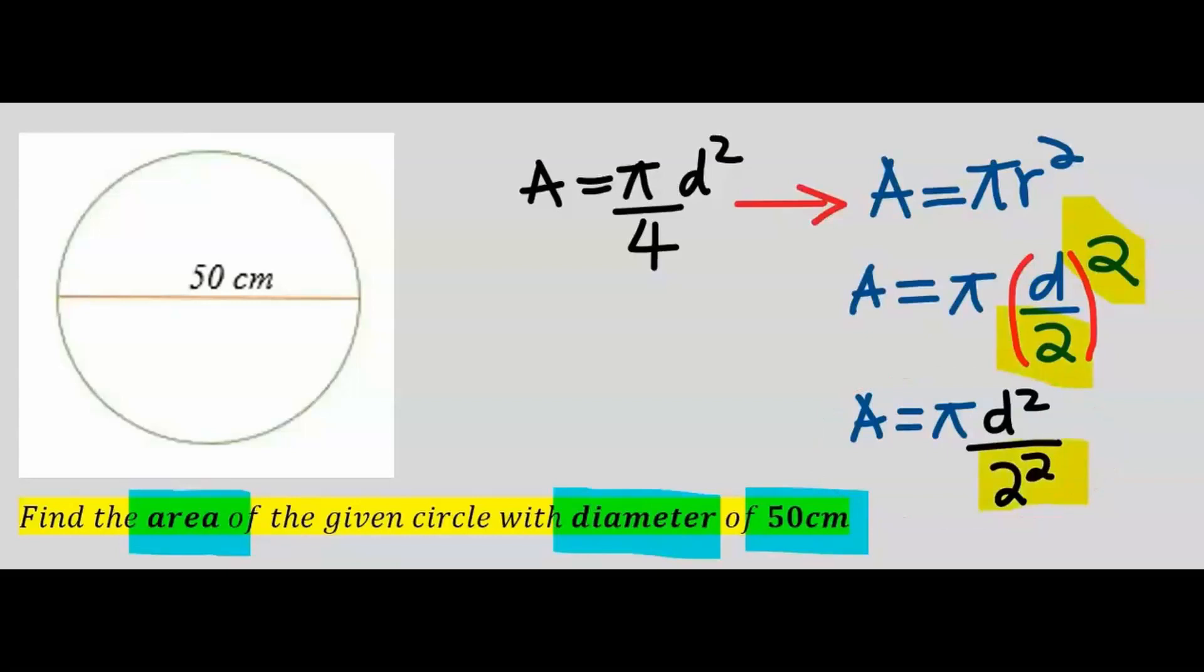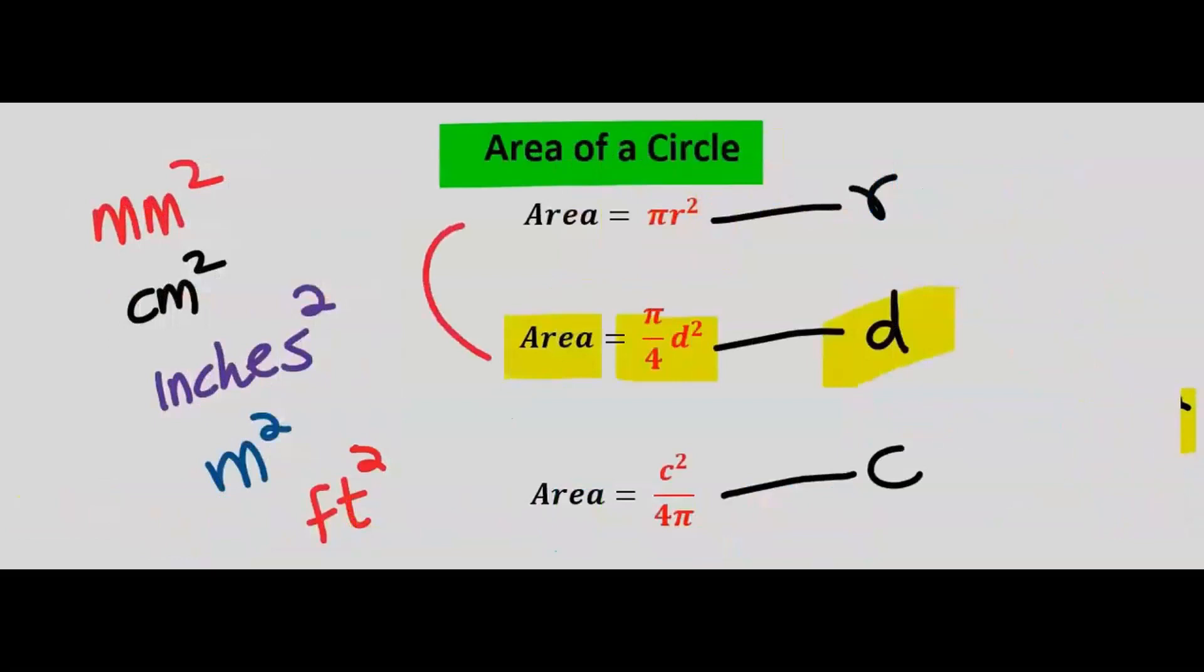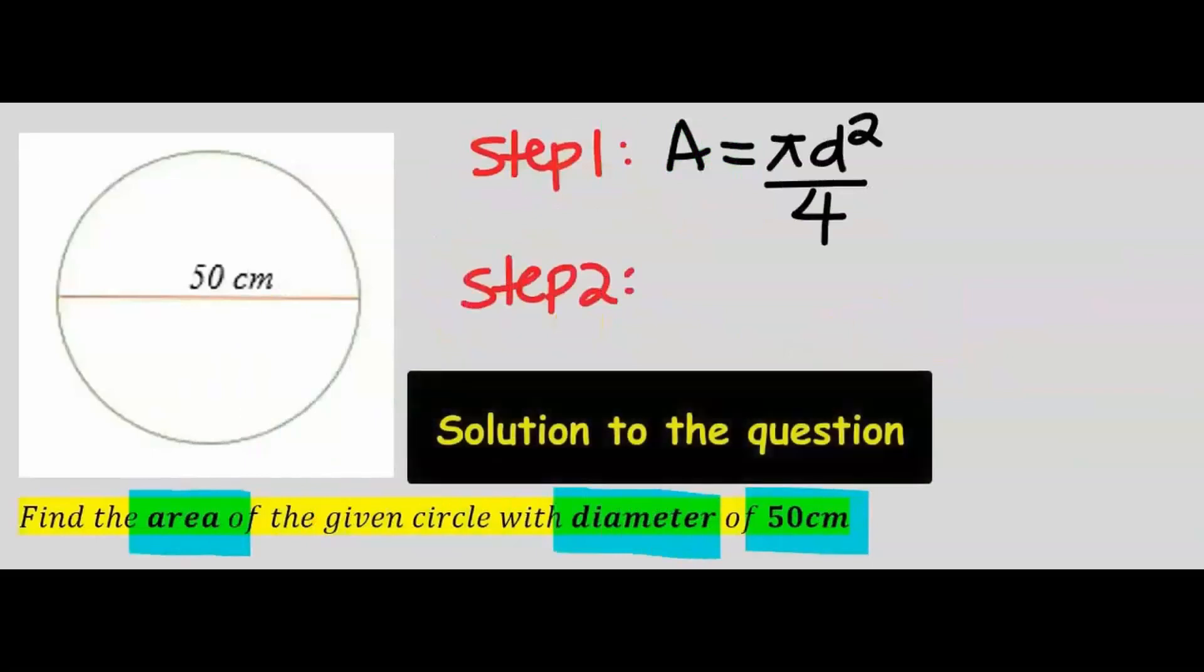And we are going to have π multiplied by d squared divided by 4, which is exactly what we have here. Hence, the second formula is a modification of the first formula.